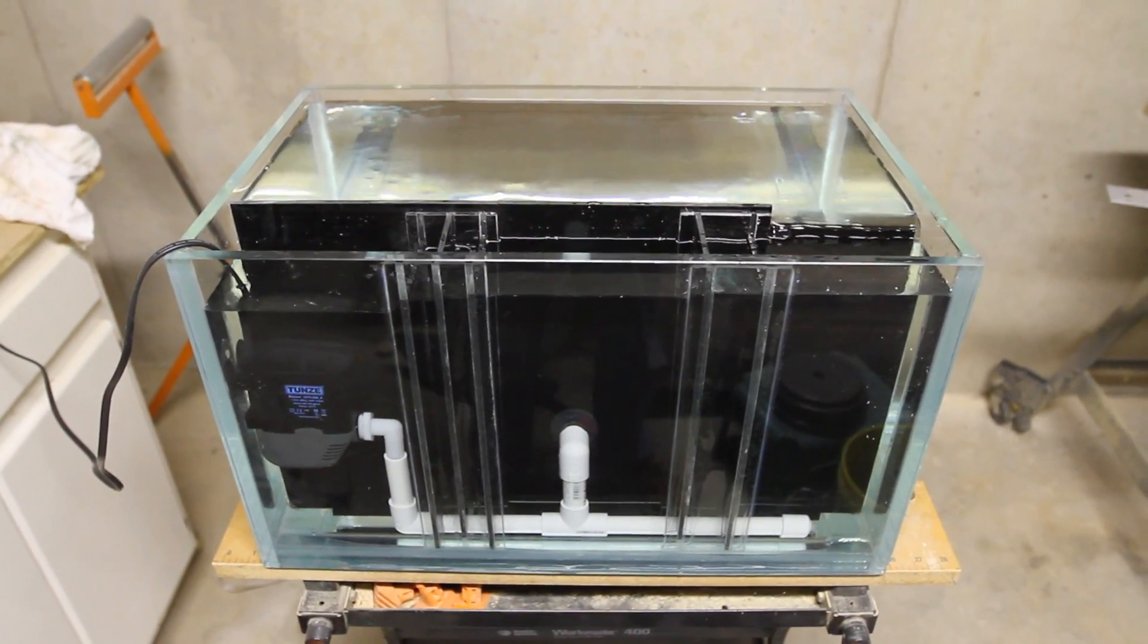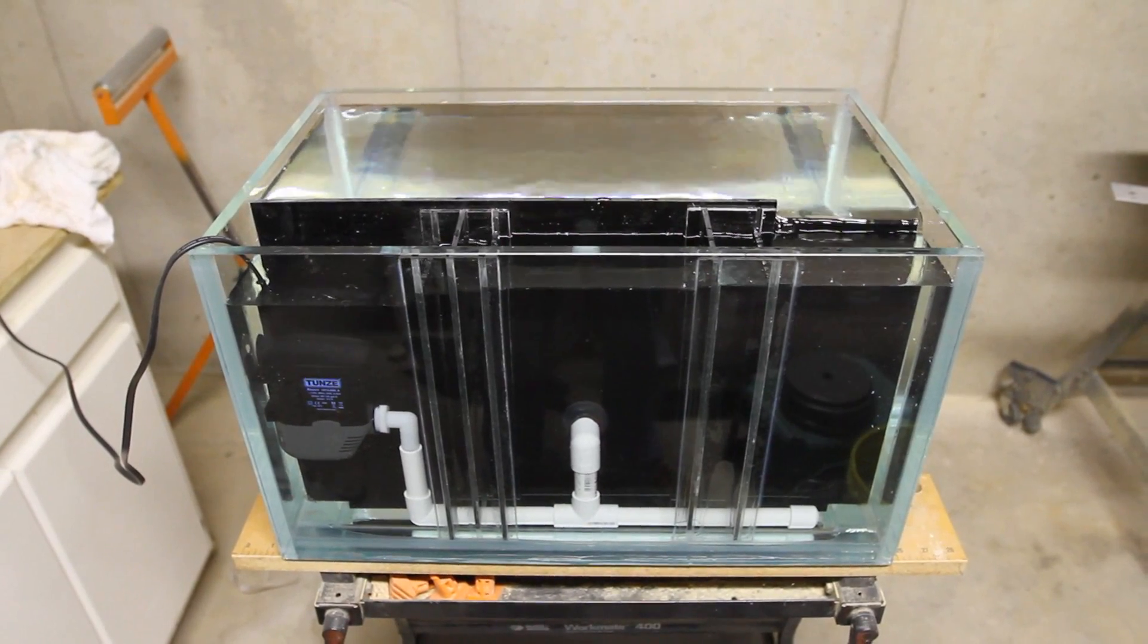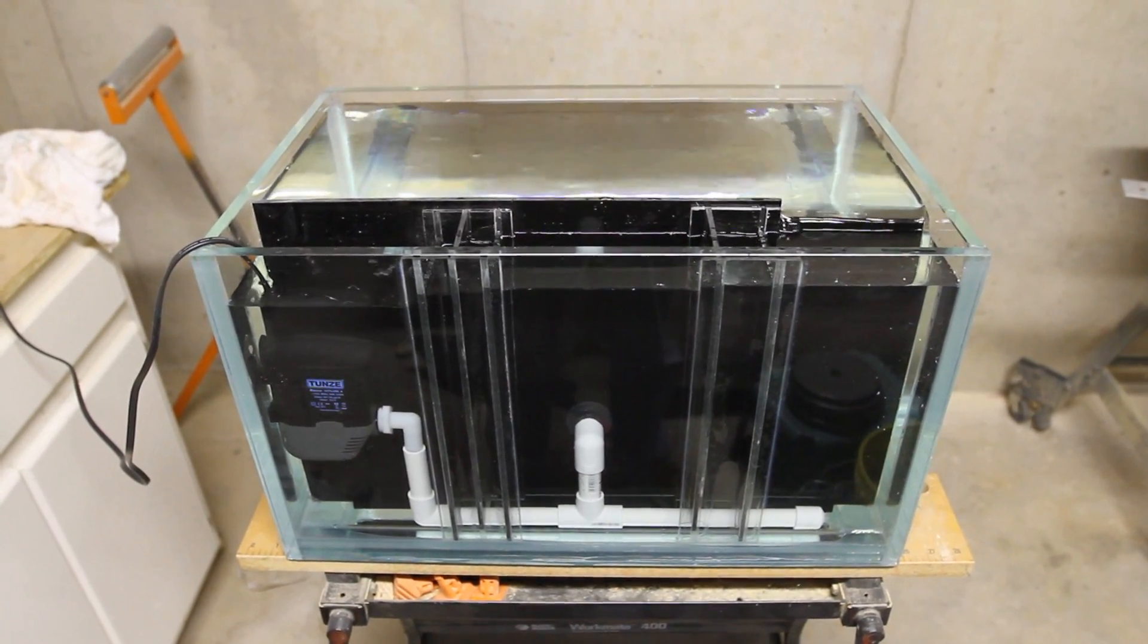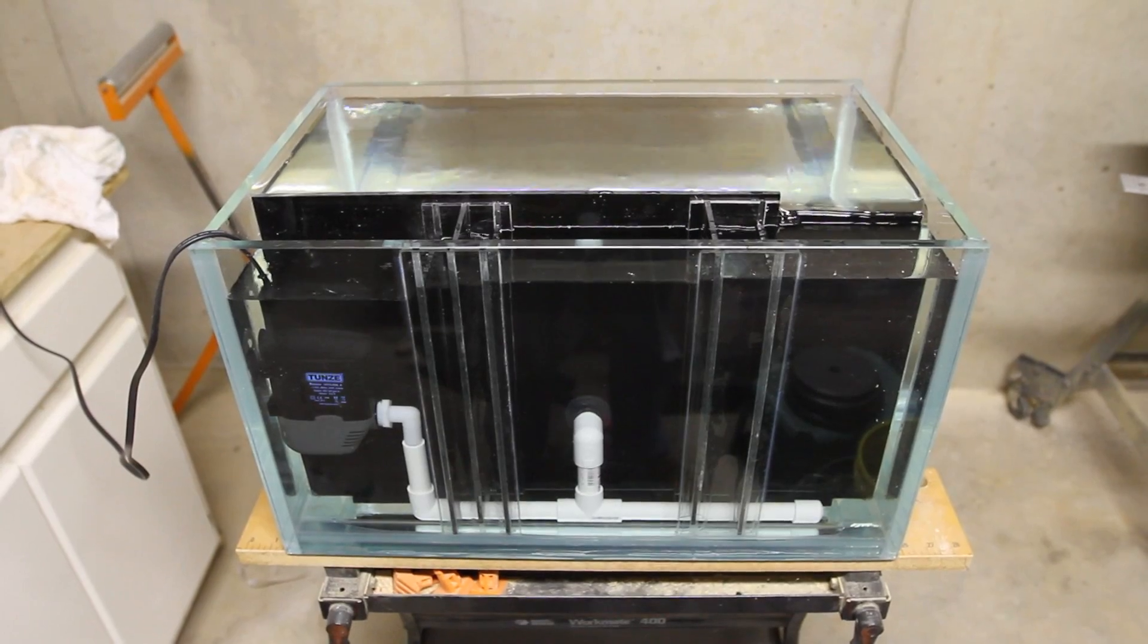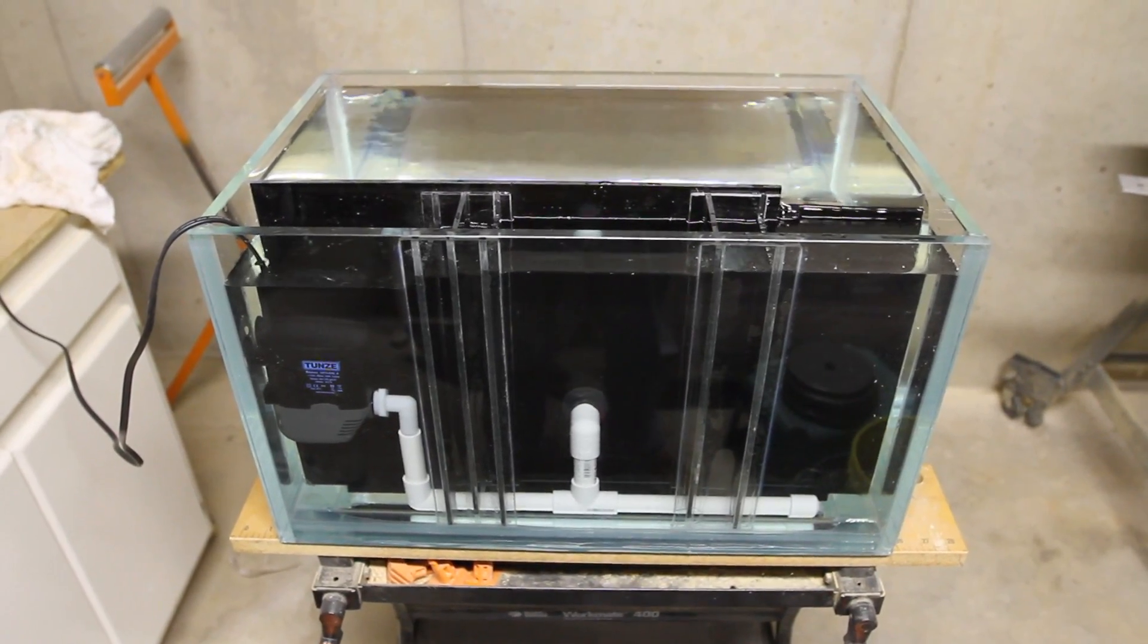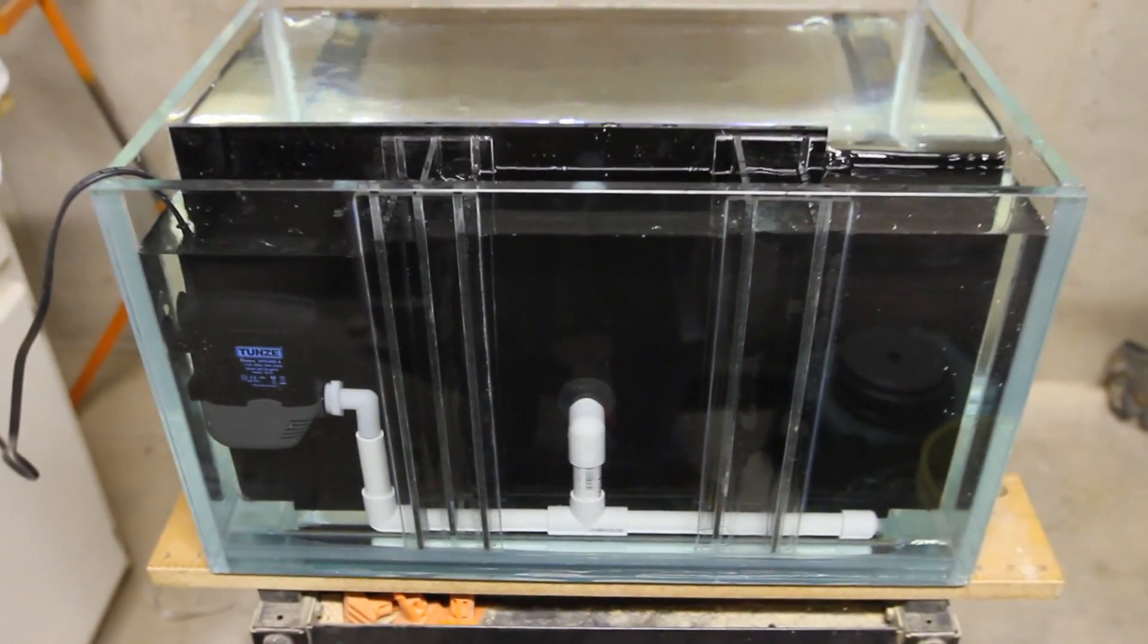This is a tank built by glasscages.com. It's three-sided starfire glass. The return area and the refugium area are built by myself using acrylic parts.